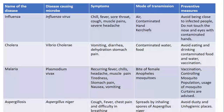Cholera is caused by Vibrio cholerae. Symptoms include vomiting, diarrhea, dehydration, and stomach pain. It is transmitted through contaminated water and food. Prevention includes avoiding contaminated food and water, and vaccination.